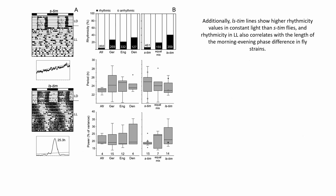Additionally, l-s-tim lines show higher rhythmicity values in constant light than s-tim flies, and rhythmicity in LL also correlates with the length of the morning-evening phase difference in fly strains.